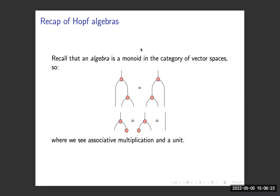I'm going to try and do this in a very pedagogical way, so I'll start off by recapping what Hopf algebras are. My diagrams in this talk will always be from bottom to top. We start with an algebra — the definition I'm going to use is a monoid in the category of spaces. So we have an associative multiplication at the top and a unit at the bottom, where the morphisms are the usual ones.